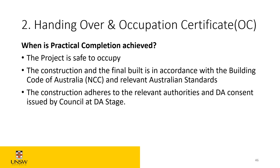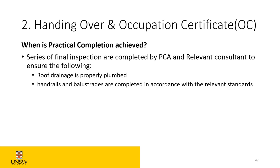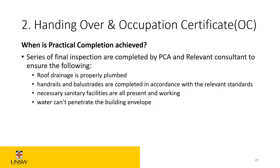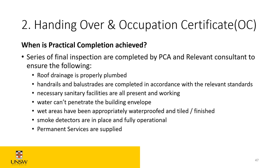There should be a series of final inspections completed by the private certifier or council and relevant consultants to ensure: roof drainage is properly plumbed and not leaking; all handrails and balustrades are completed according to relevant standards; all necessary sanitary facilities are present and working; water cannot penetrate the building envelope and all wet areas are properly waterproofed, tiled, and finished; smoke detectors are in place and fully operational; permanent services — sewer, water, electrical — are operational; and a final survey inspection has been completed.